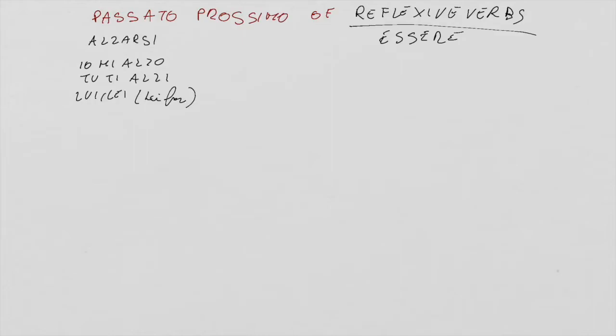So let's start: io mi alzo, tu ti alzi, lui lei and even lei forma si alza, noi ci alziamo, voi vi alzate, loro si alzano.